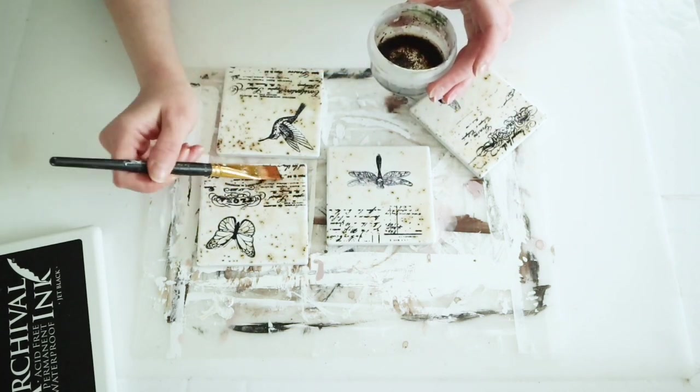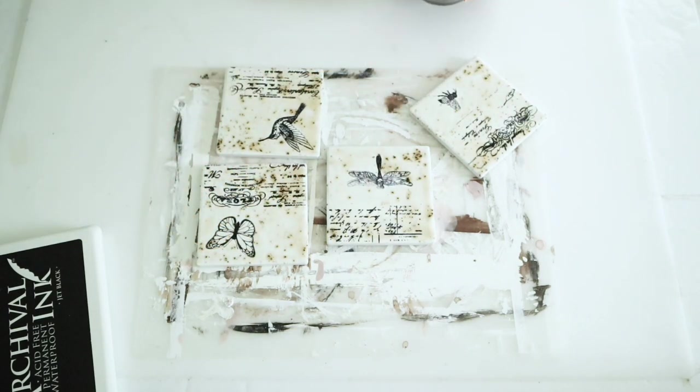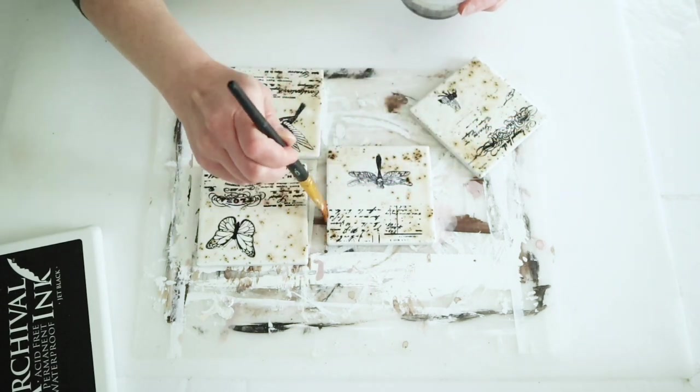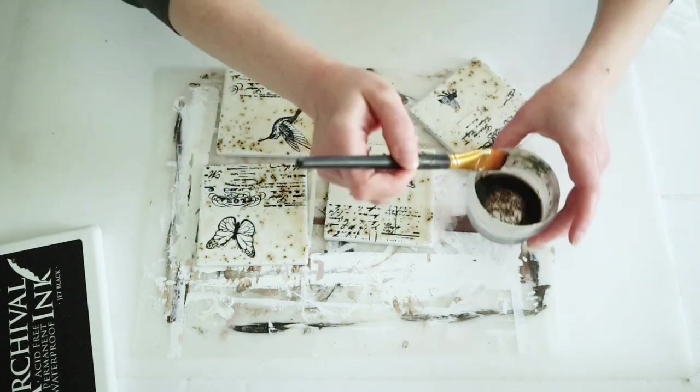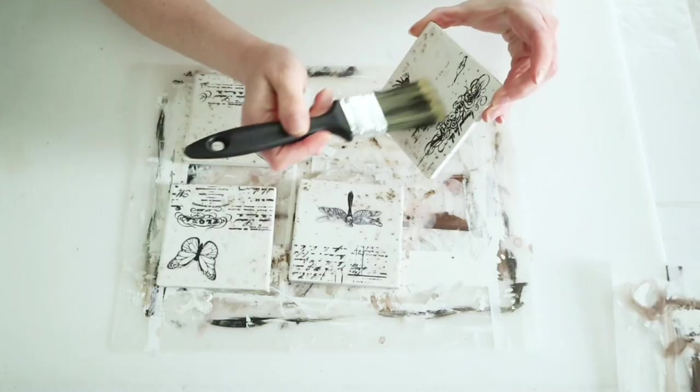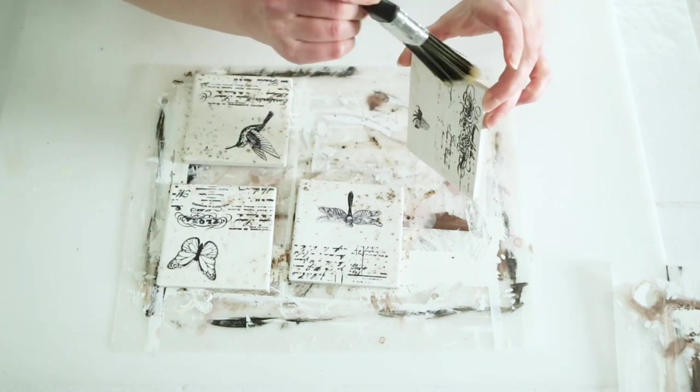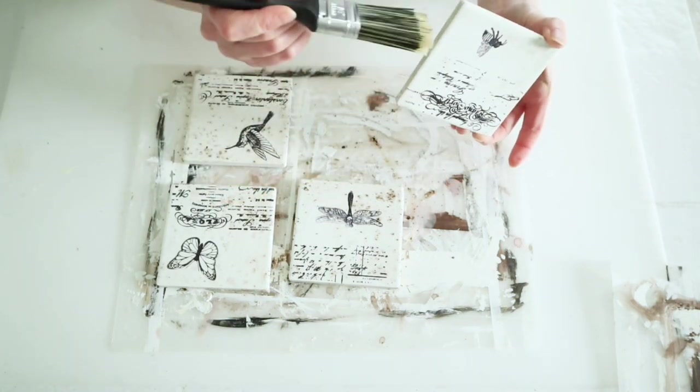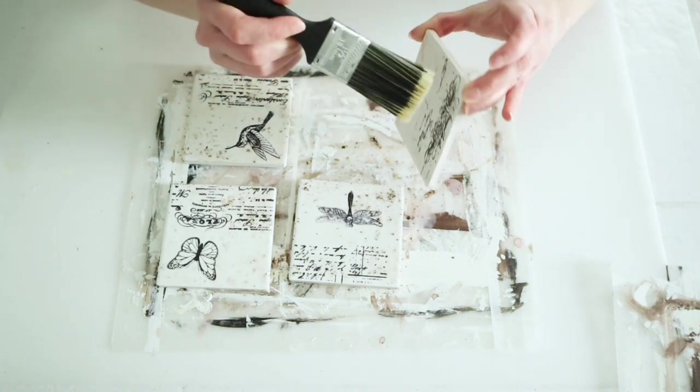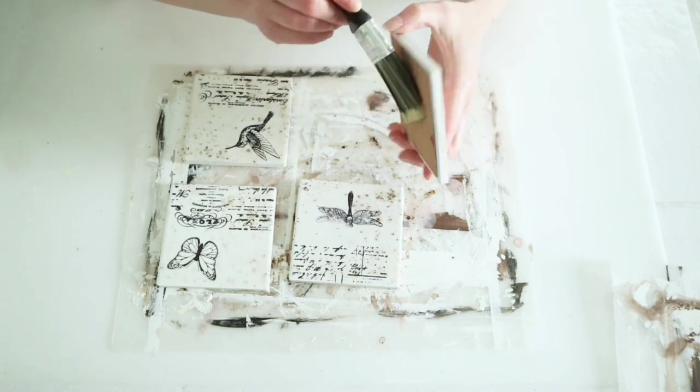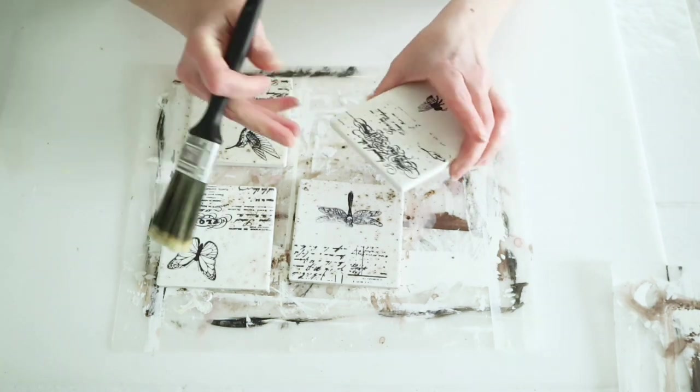Anywhere you put the coffee grinds, you're going to get those darker spots. I went over these until I was happy with the coffee stain and grinds. Once they're fully dry, you can just brush those coffee grinds off with a large brush, and then I sealed these with two coats of Aileen's acrylic sealer.